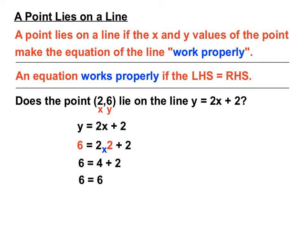The point, the values of 2, 6 have made that equation work sensibly, mathematically. And so, we can say left hand side equals right hand side. And we can conclude then that the point 2, 6 does lie on the line y equals 2x plus 2. We can say that the point 2, 6 satisfies the equation of the line y equals 2x plus 2.